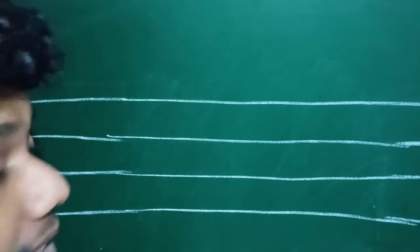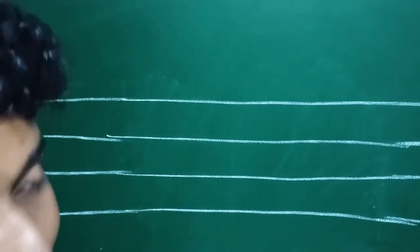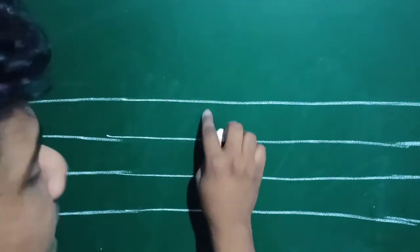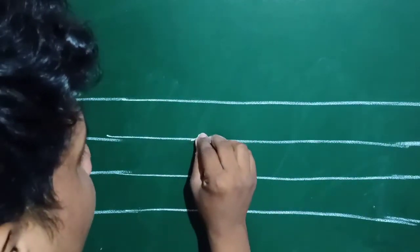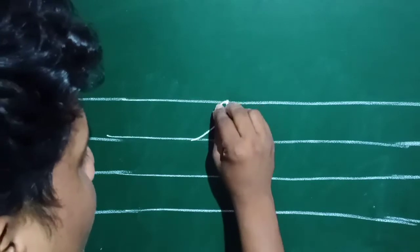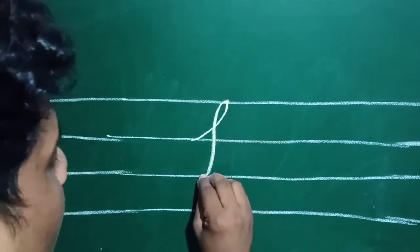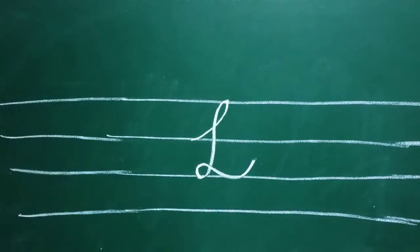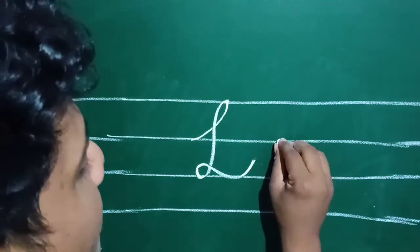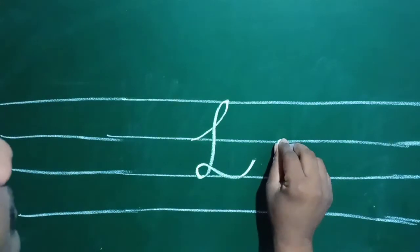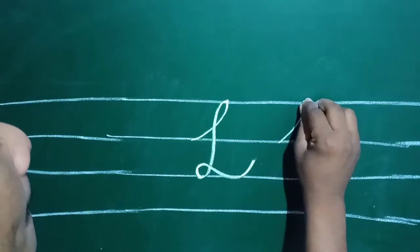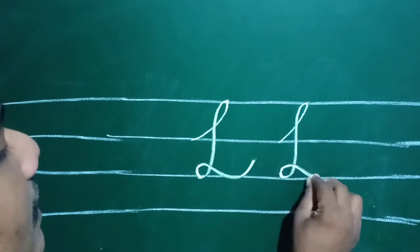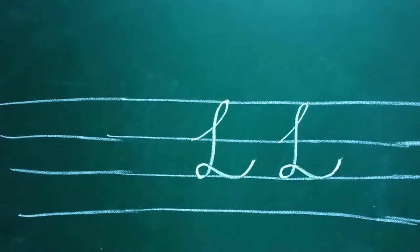Now we will learn how to write capital letter L. Capital letter L is very simple. It starts from the second line — 1, 2. Like this, starts from here, then yes. This is capital letter L.